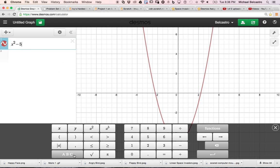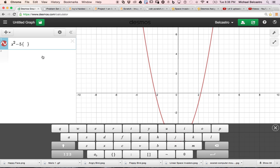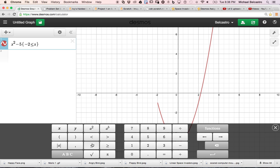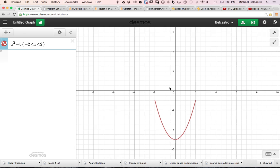So I'd go to ABC. If you want to play with the domain, this little keyboard pops up. We put our curly brackets, and maybe I want the domain to be from negative to positive 2. So I go to negative 2, less than or equal to x, which is less than or equal to 2. And there you go. You kind of get a smile.